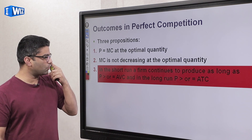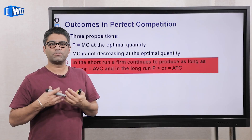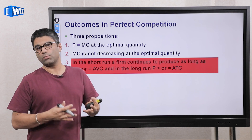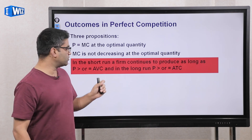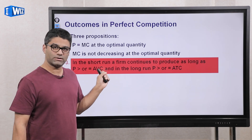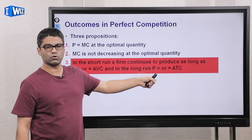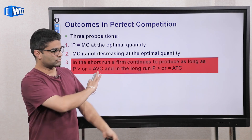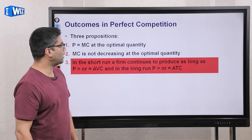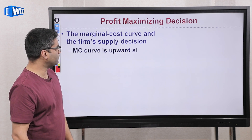In this video we are going to address the third proposition, which says that whether you produce in the short run or not, or whether you exit in the long run or not, is going to be dependent on where your price is in relation to either your average variable cost or average total cost. Just take the statement as given right now, and then we are going to convince you that that is true in this video.